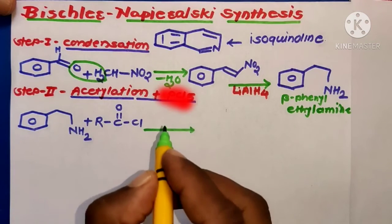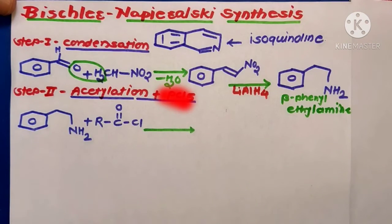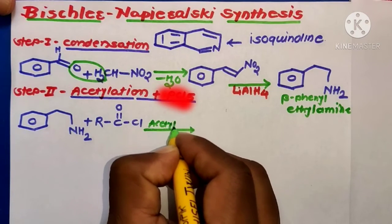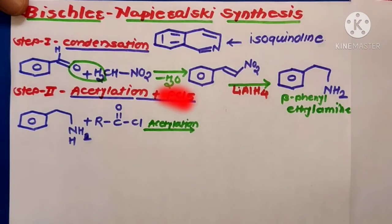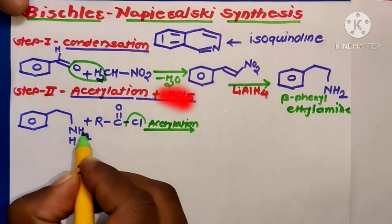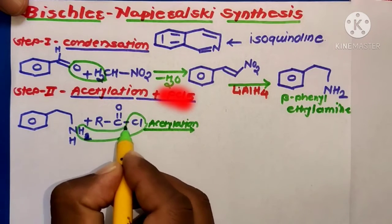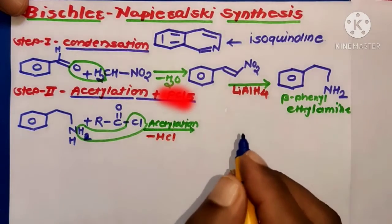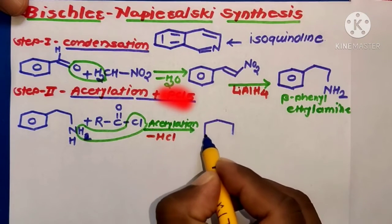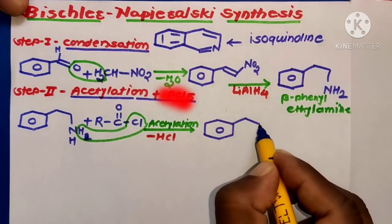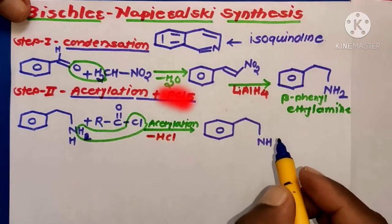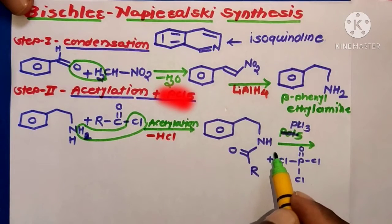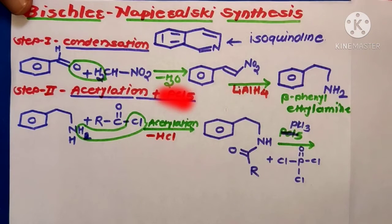There is elimination of HCl — that is acetylation — to form a molecule with a benzene nucleus, where the Cl and one H from the amine are eliminated. This gives the amide product: benzene-CH2-CH2-NH-C(=O)-R. This molecule is then reacted in the presence of a dehydrating reagent like POCl3.